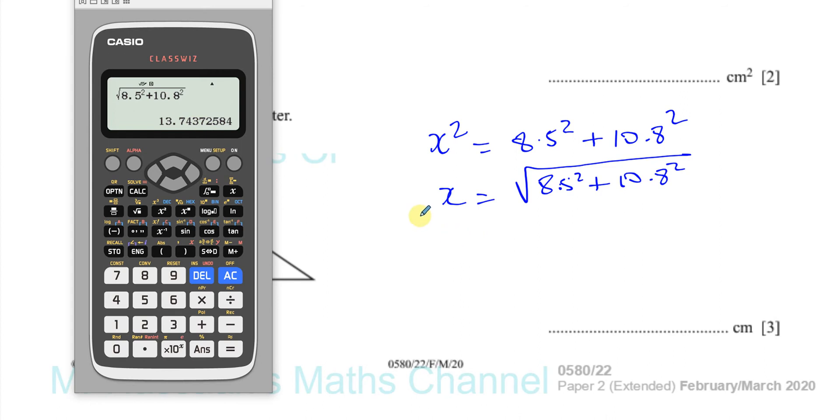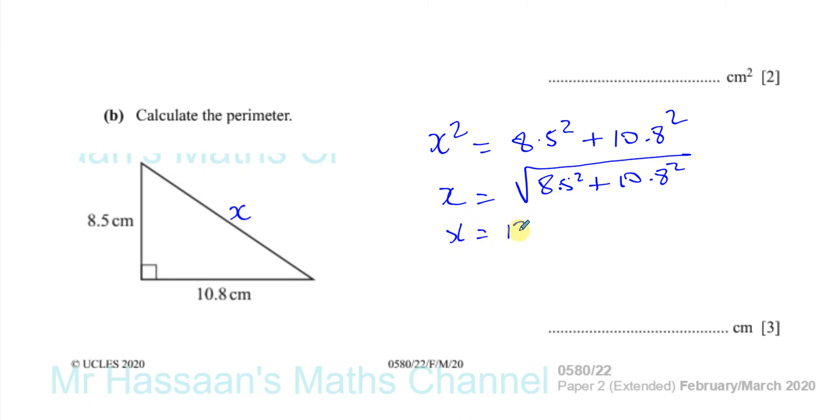So I'm going to write this to like, you know, three, four decimal places so that I can then run my final answer. So X equals 13.7437, all right? X equals 13.7437, dot, dot, dot.